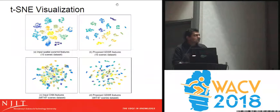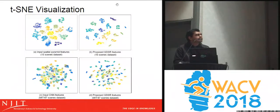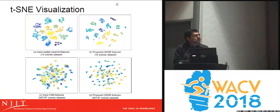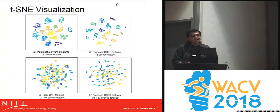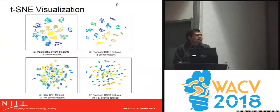Finally, I would like to show the t-SNE visualization. T-SNE, or t-Stochastic Neighborhood Embedding, is a technique used to visualize high-dimensional data. The image on the left shows the input features and the image on the right shows the features after applying the GDSR method. From the figure, we can see that the images on the right have more distance between samples of different classes. Our method also reduces the distance between samples of the same class, resulting in better discrimination among different classes and thereby improving classification performance.